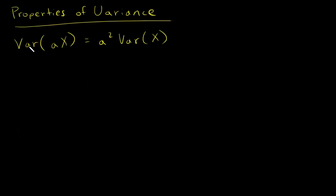In this video, I want to prove that the variance of a constant times a random variable x equals that constant squared times the variance of x. And first, I want to start with what is the definition of variance and write that down.